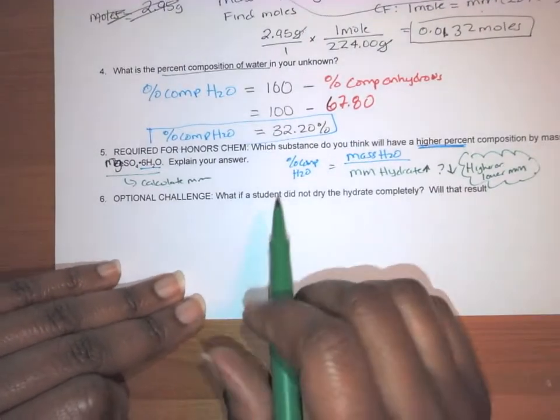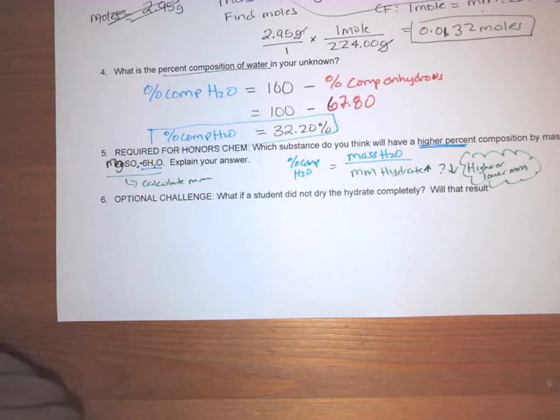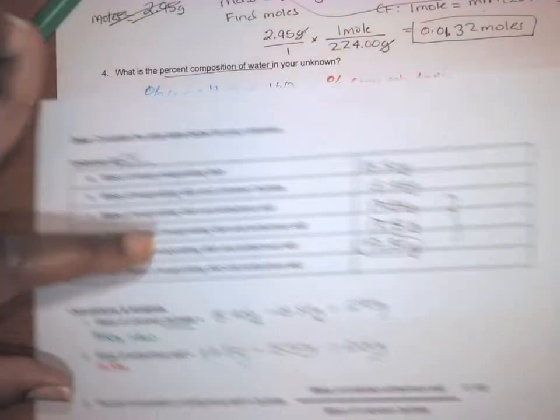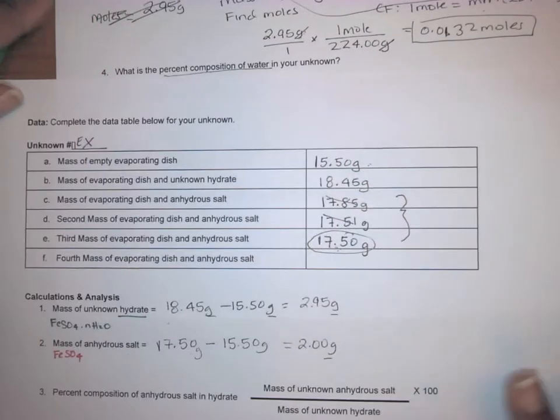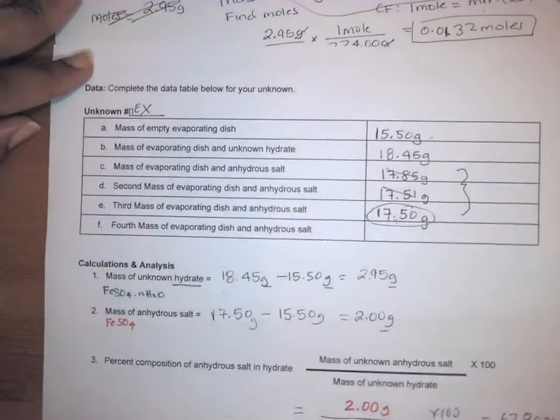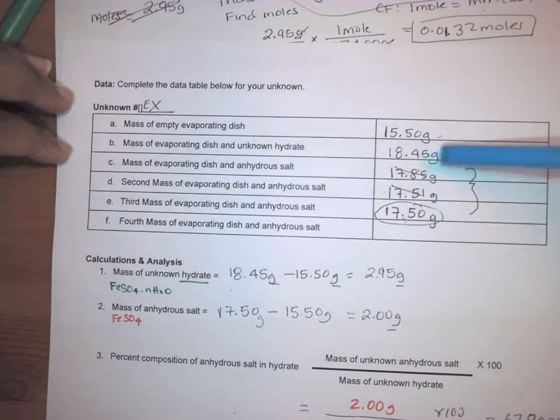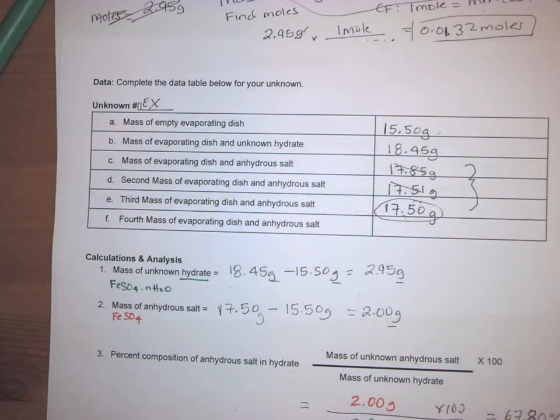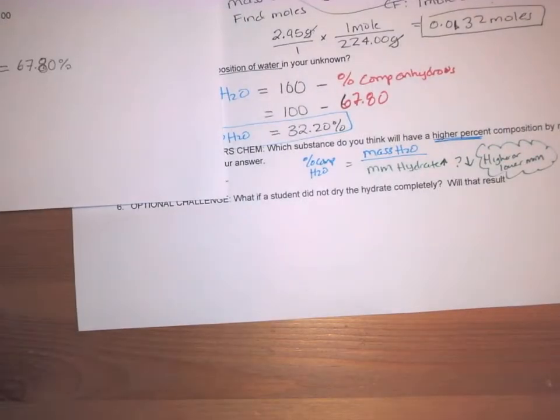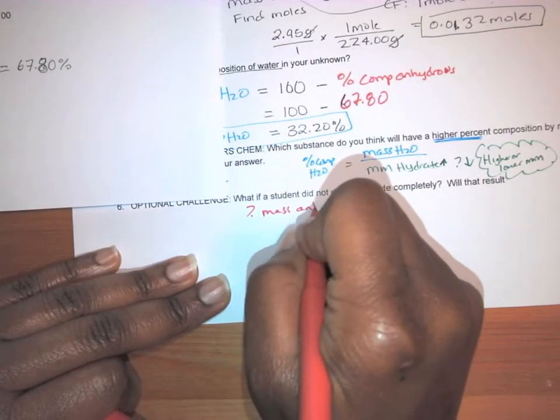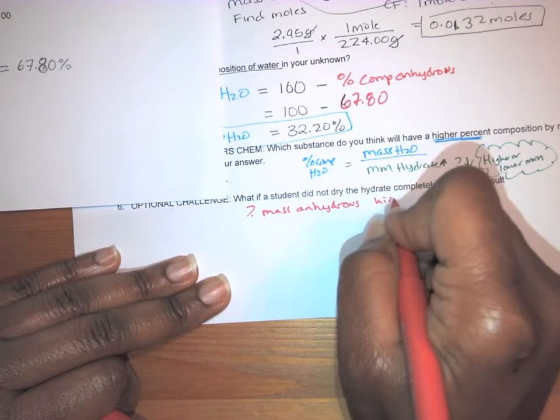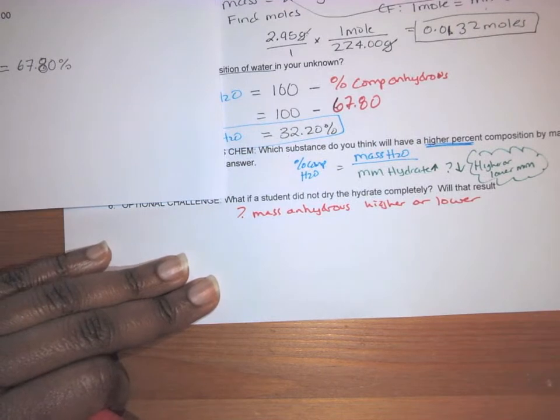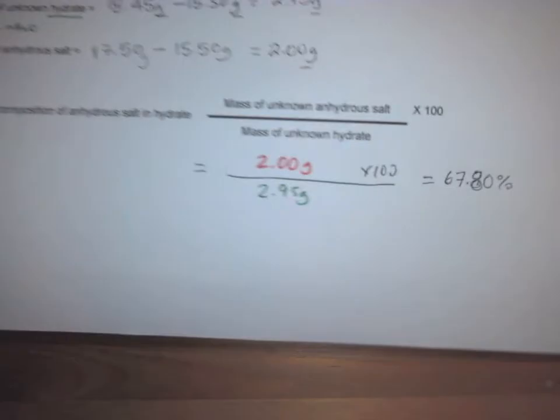Last question that I'm going to go over. And this one is a challenge problem. This one's like sort of an error analysis. So let's say the student did not dry the hydrate completely. So that goes back to the data table, and this is optional. So if you're not choosing to do it, you can not watch the rest of this, but if you are choosing to do it and you're, or you're just curious, so that means that the numbers that are for the mass of the anhydrous salt, if it's not dried, will it be higher or lower than expected? That's the first thing you need to ask yourself. So is it higher or lower? That's the mass of the anhydrous.